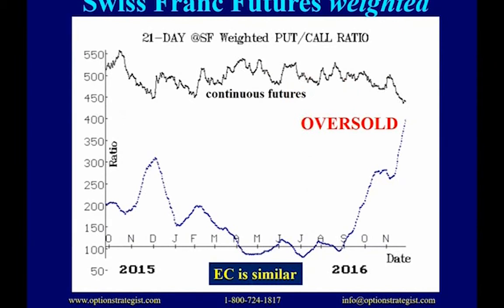In the post-election period, the dollar has been very strong and bonds have been selling off. The Swiss franc is dropping and people are buying puts on it heavily — $400 worth of puts for every $100 worth of calls — pushing it to an oversold condition. Eventually this will roll over and give a buy signal, but we're not there yet. The euro chart looks very similar. Again, oversold does not mean buy.